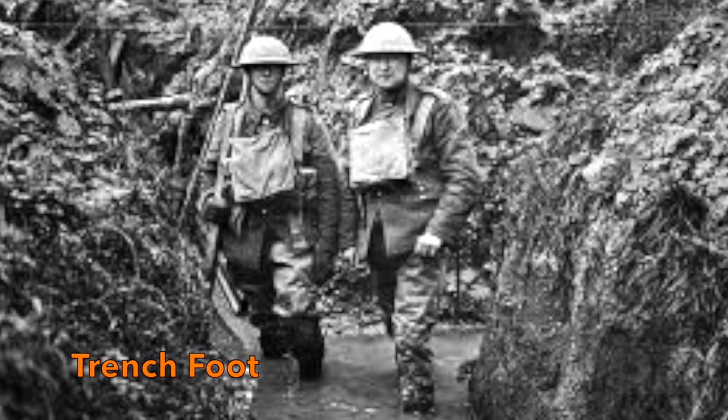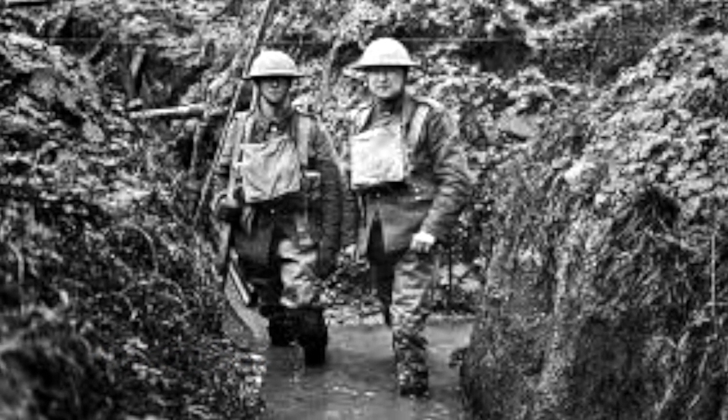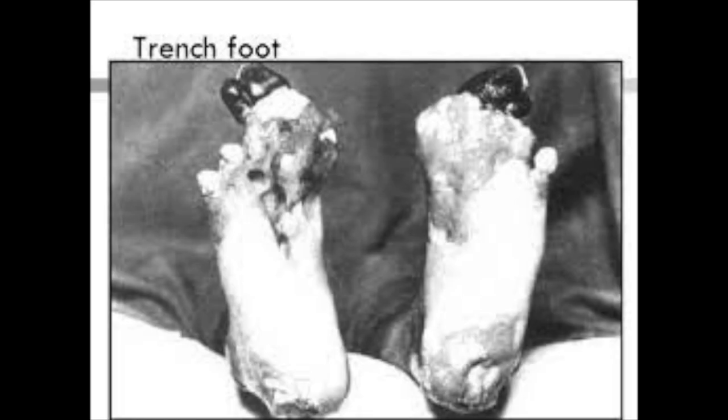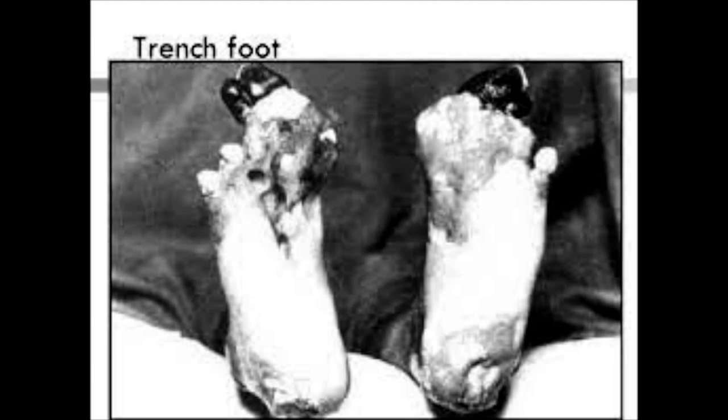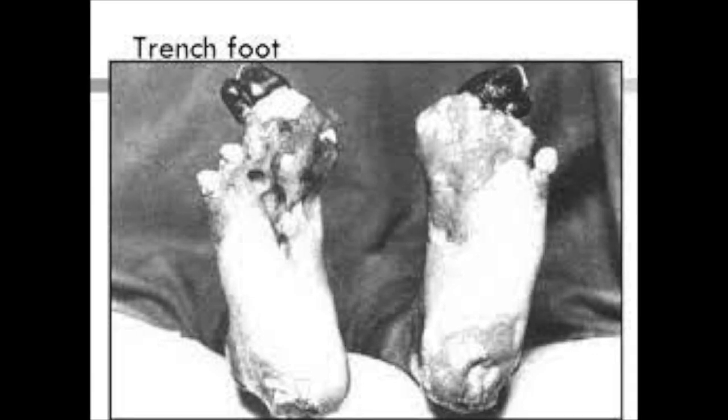Soldiers on both sides also experienced something called trench foot or immersion foot — a fungal infection caused by prolonged exposure to damp, cold environments. If trench foot was not treated soon, gangrene would set in and the soldier's toes or foot would have to be amputated. So as you can see, the Great War turned out to be not so great. The soldiers had poor living conditions, the weather was horrible, you lived under constant threat of death with explosive shells coming over your head. If that didn't kill you, you were forced to charge into a barrage of machine gun fire. If that didn't kill you, the poisonous gas — which is a horrific death — was coming your way. And if that didn't kill you, you got trench foot.